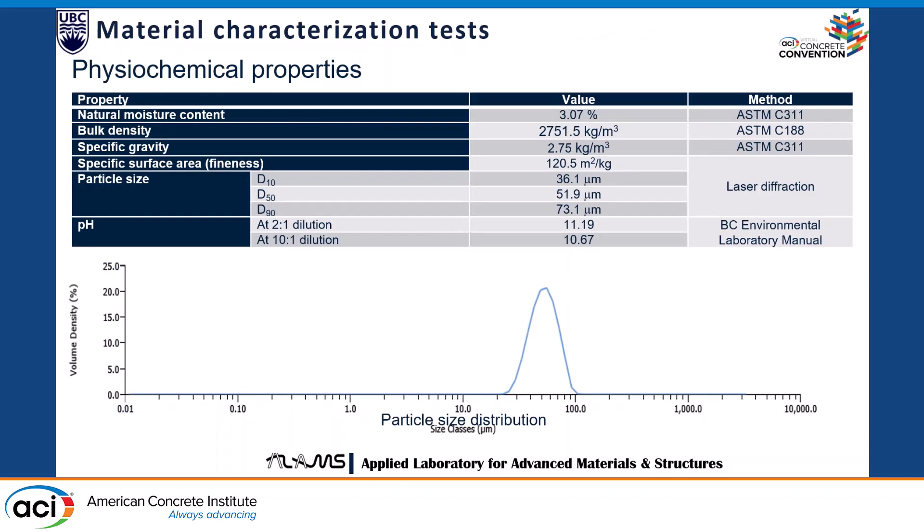These are the physical properties of the wood ash we used. The natural moisture content is 3.07% — we found it in a dry state, but it actually has a lot of absorption capacity. The D50 particle size was 51.9 micrometers, which is quite large compared to regular fly ash. Its pH was around 10 to 11, which is on the alkaline side.